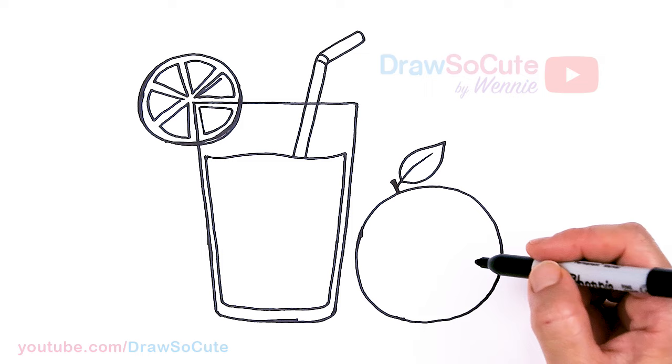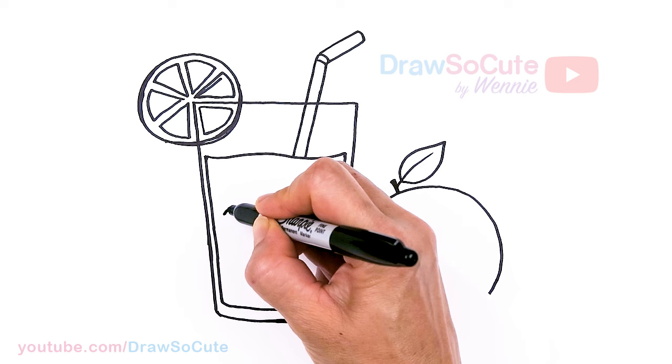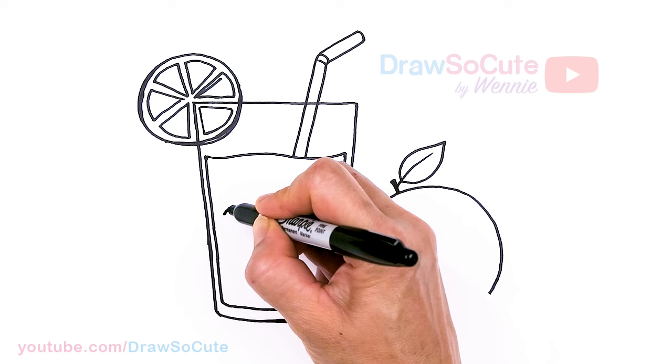Then from there, let's bring this all to life, right? Because this is a Draw So Cute orange juice. So if you want to do that, let's come about right here. We're going to add two circles.